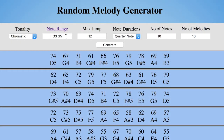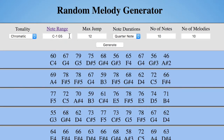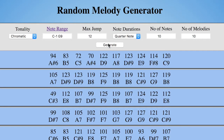Note Range allows you to specify how high and low you want your melody to go. The lowest you can choose is the note C in the minus one octave, which is very low. The highest note is G9, which is very high. You can see the pitch numbers on the top row, 0 to 127, correspond with the row below it — the note name and the octave.